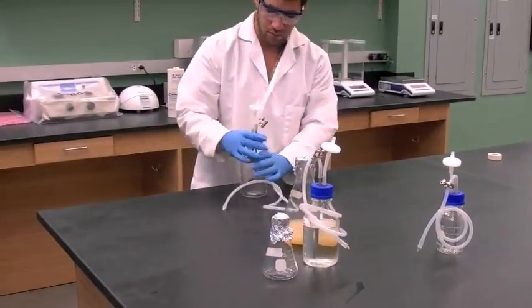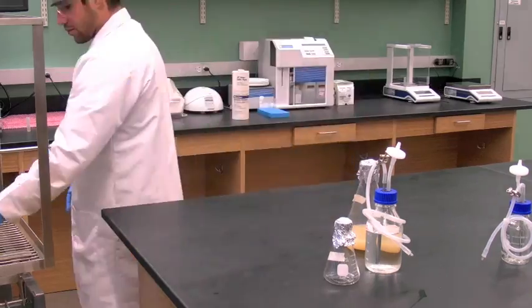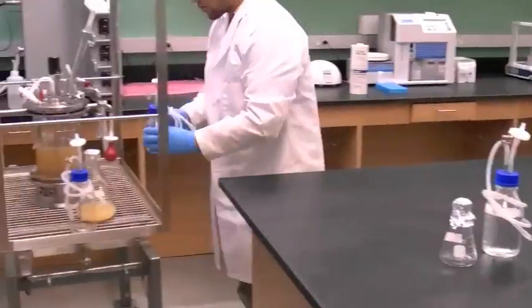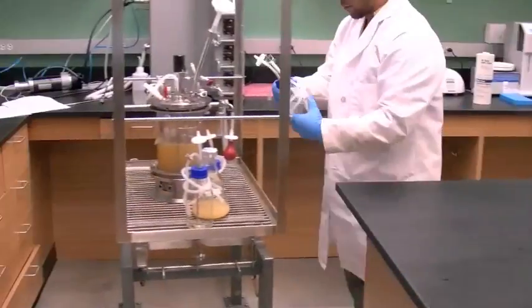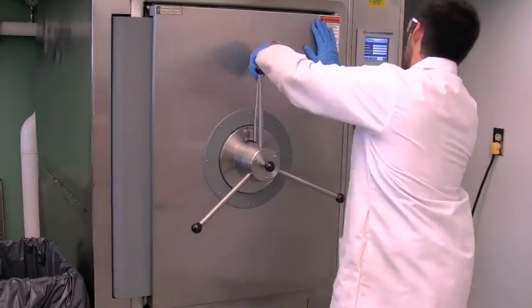Get autoclave cart. Set fermenter vessel upright on cart and all other solutions in plastic autoclave pans. Move the fermenter and solutions into the autoclave and the BRL using the cart.